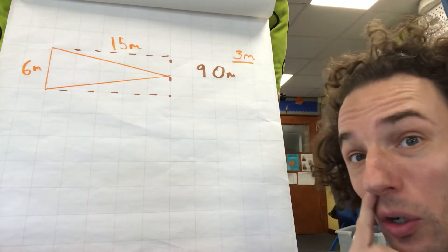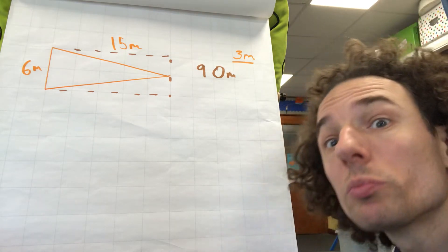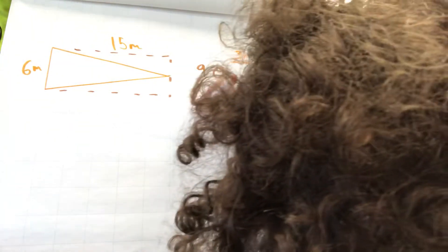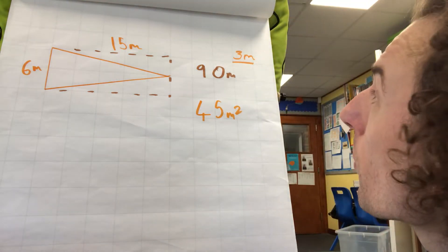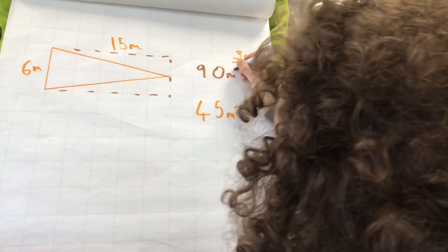which means to halve it and find the area of our triangle, half of 90, 45. So our triangle is 45 metres squared. I forgot to mention the squared on the 90 metres squared. I bet you were on me.